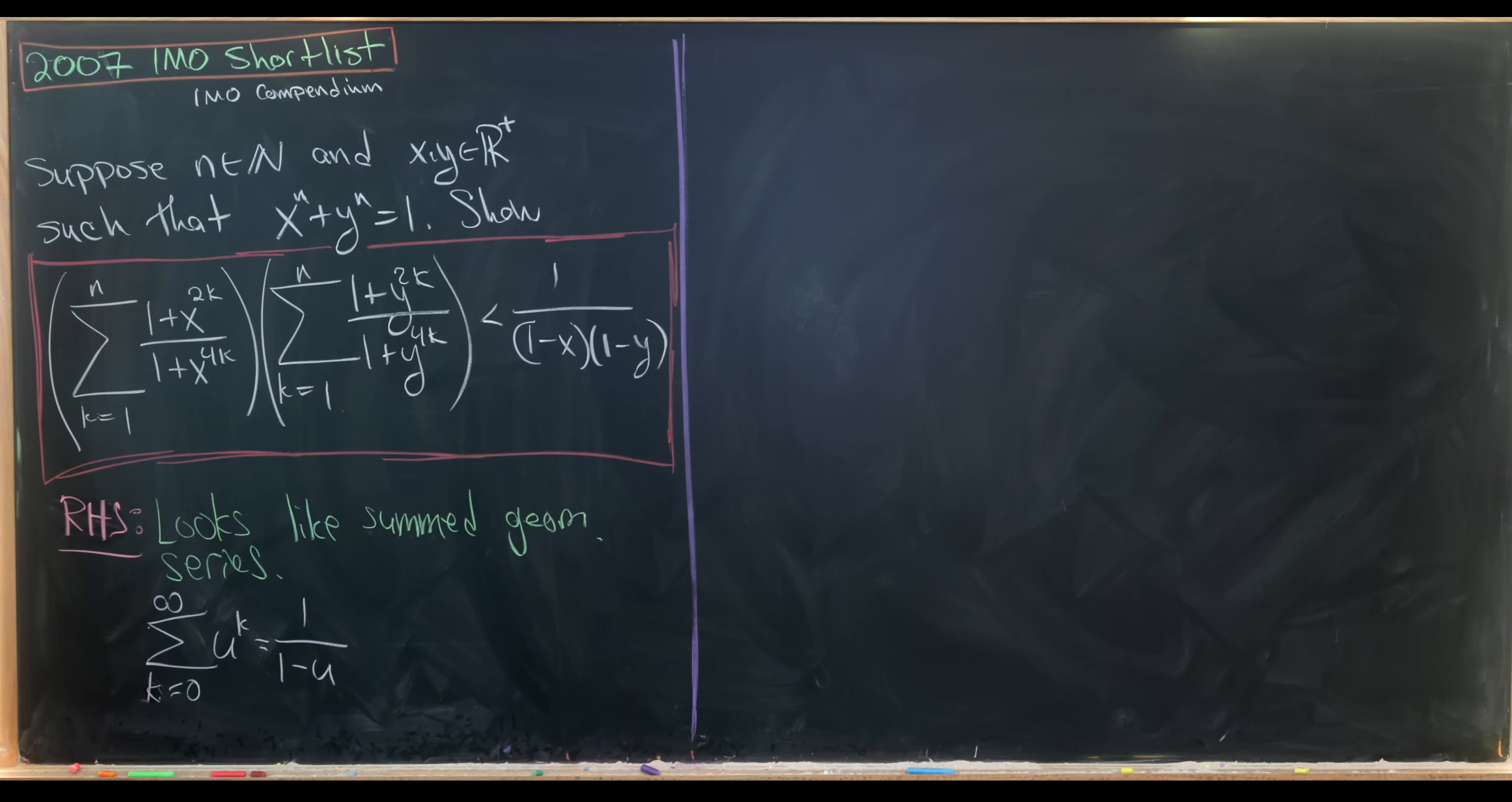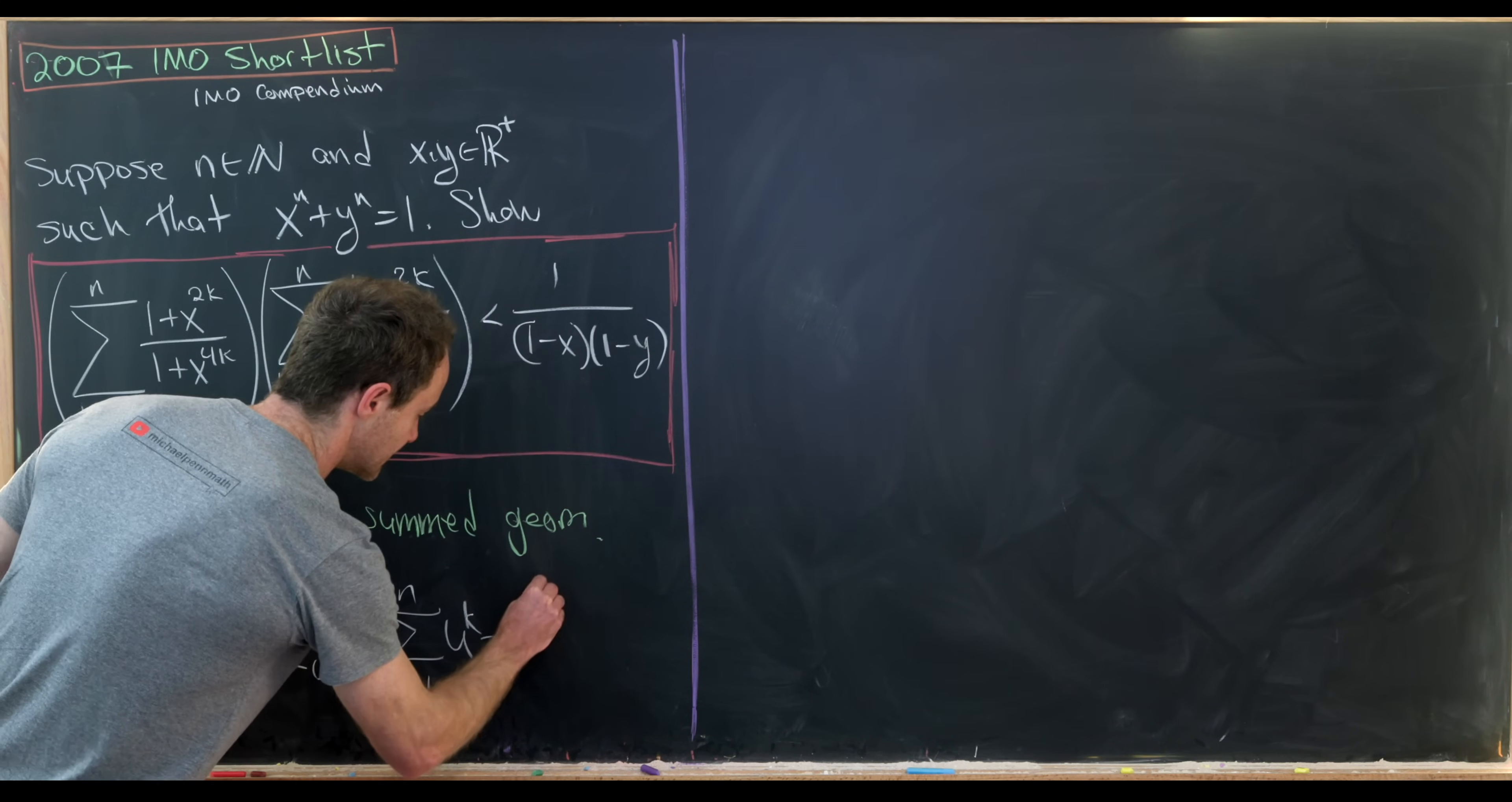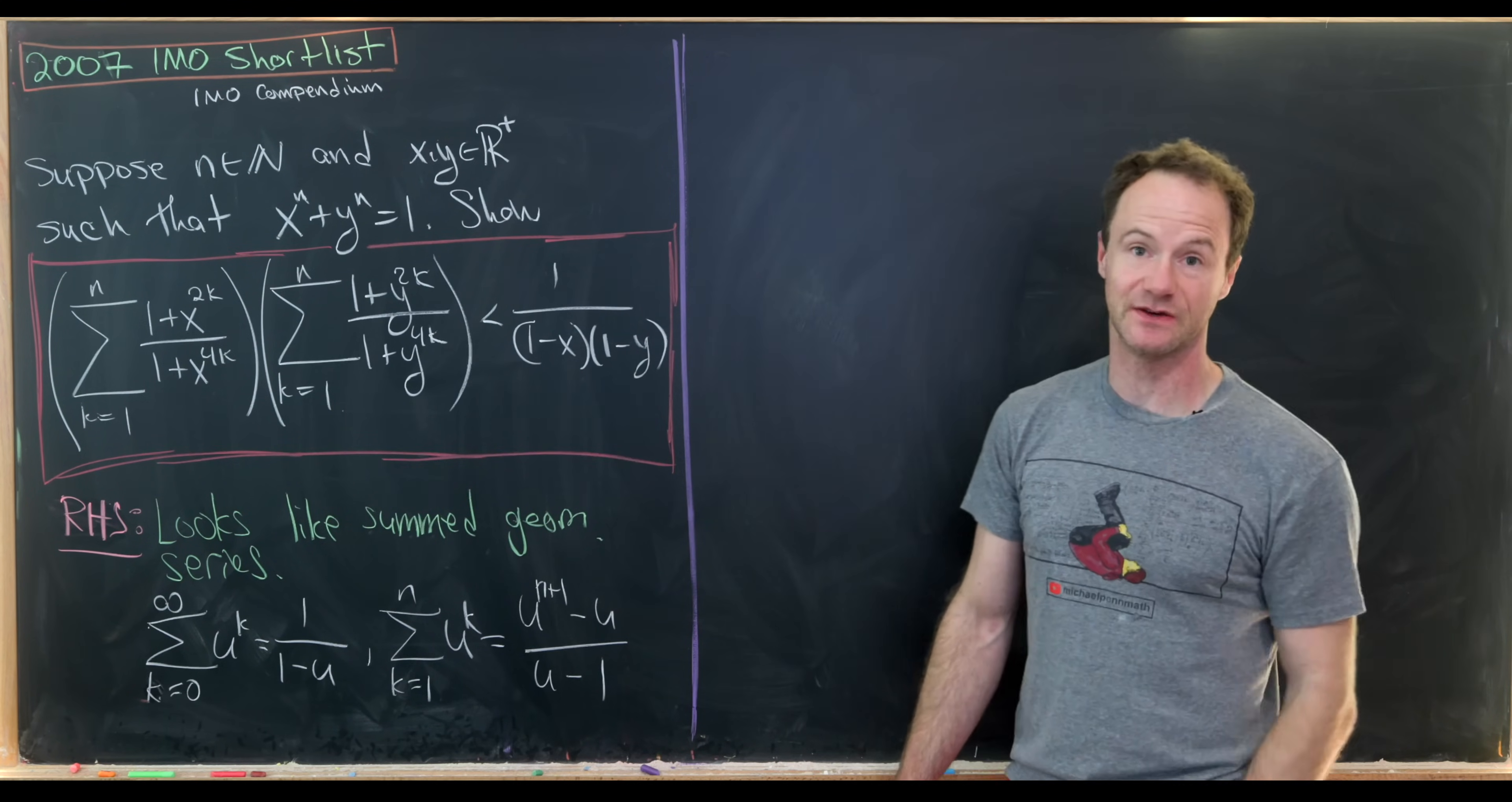So again, that's sum of a geometric series. But if we take the sum, for instance, as k goes from 1 to n of u to the k, we get something slightly different. So in this case, we'll get u to the n plus 1 minus u over u minus 1. And so that's a summation rule for a finite geometric series.